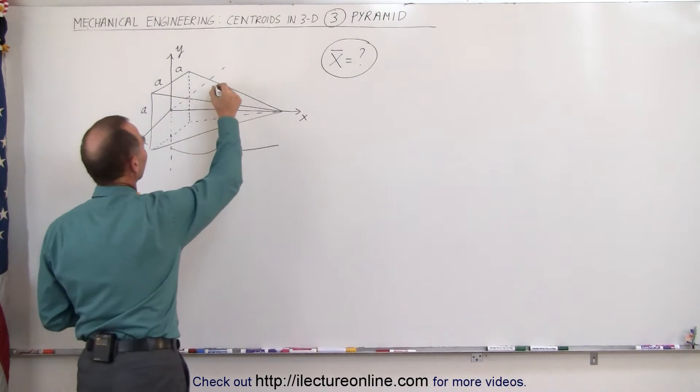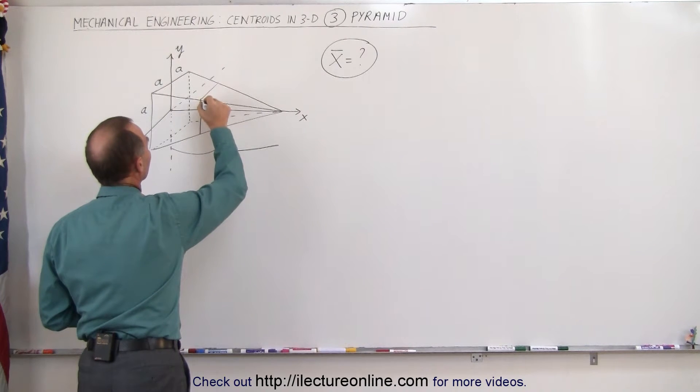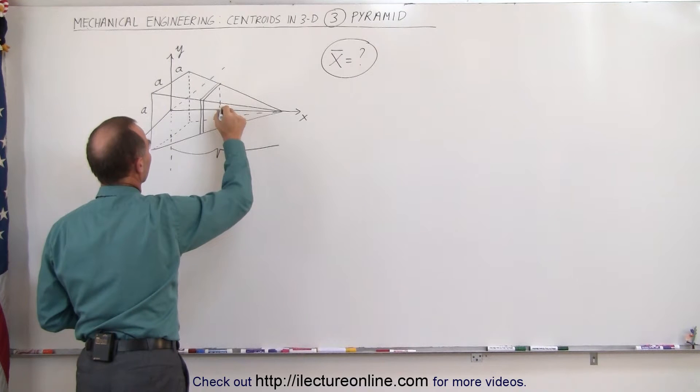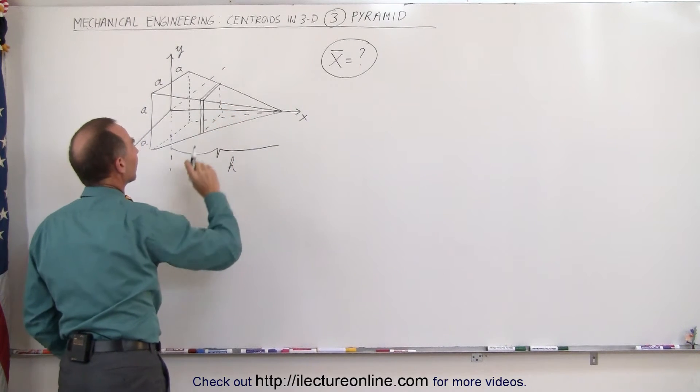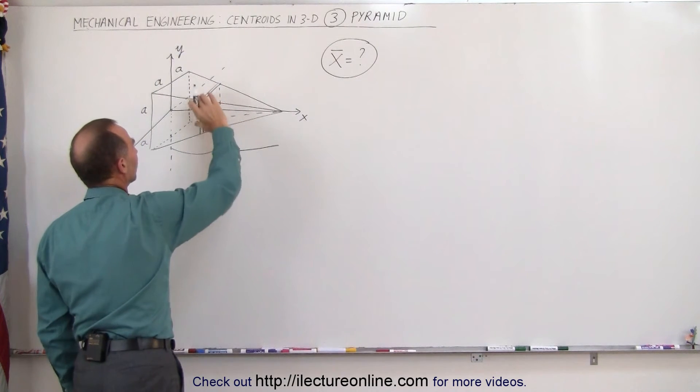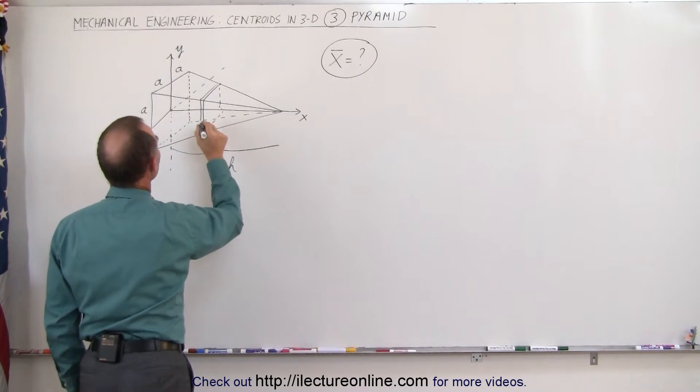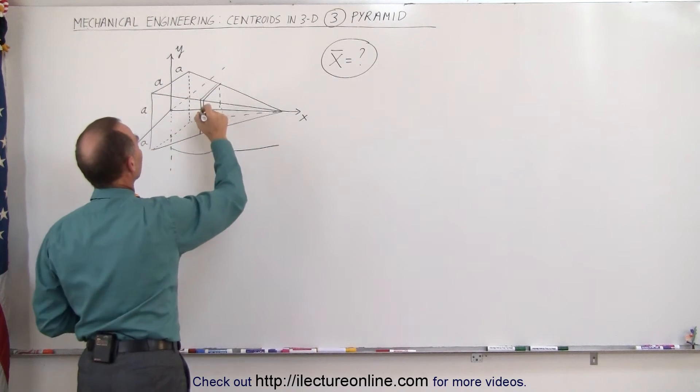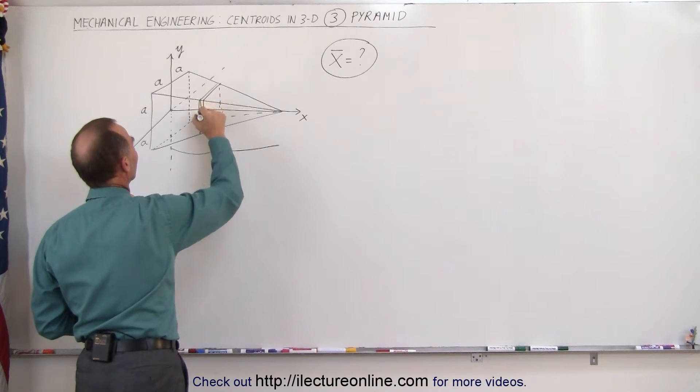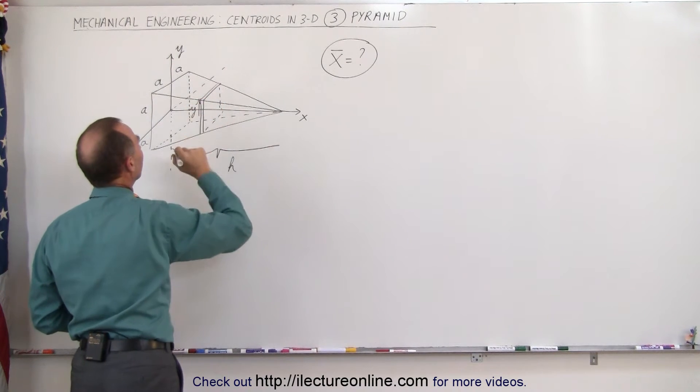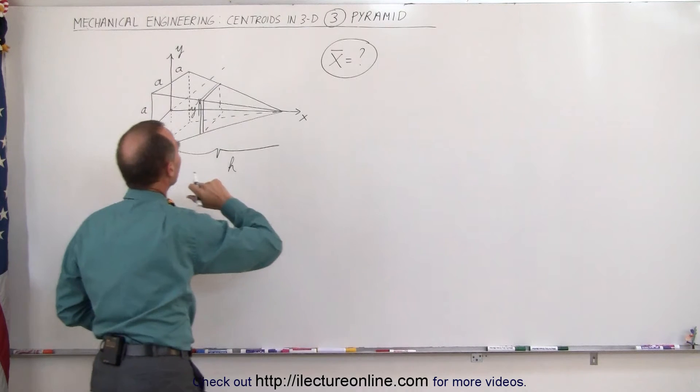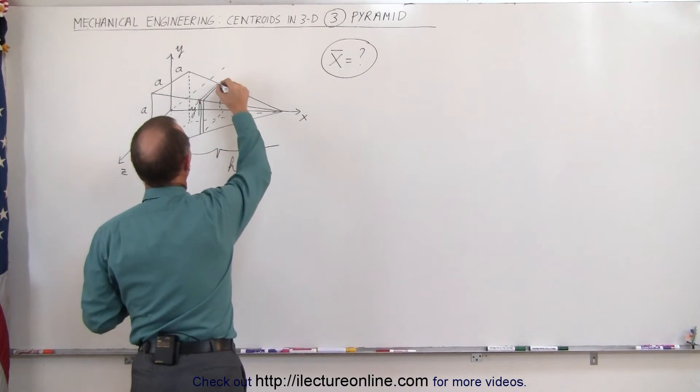Just like before, we're going to find a small little volume slice. And the height of that slice would be 2 times y. It's a little bit difficult to see here because of the angle, but the height from the center here would be equal to y. And it's a square slice.